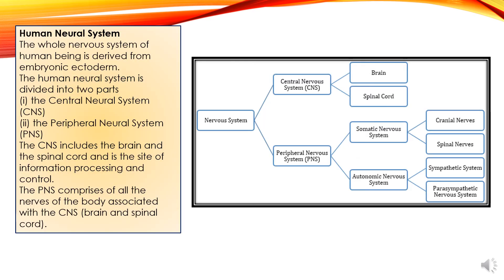The human neural system is made up of two types of systems. The whole nervous system of the human being is derived from the embryonic ectoderm. Human beings are triploblastic — our body is developed from three germinal layers: ectoderm, mesoderm, and endoderm. The nervous system is developed from the ectodermal layer of the body. The human neural system is divided into two parts: the central neural system and the peripheral neural system.